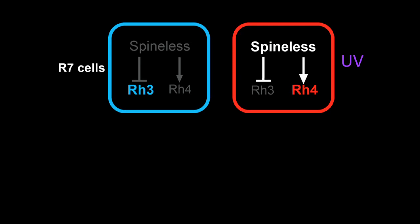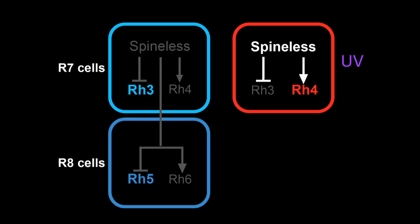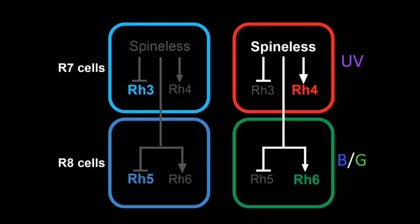Fortunately, we were able to take advantage of the fact that the R7 cell fate is coupled to the R8 fate. So in R7 cells that do not express spineless, the neighboring R8 cell expresses blue-detecting rhodopsin 5, and in the R7 cells that do express spineless, we get activation of the green-detecting rhodopsin 6 in the neighboring R8.